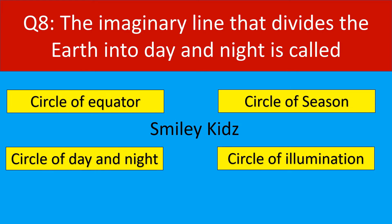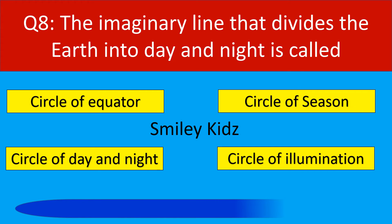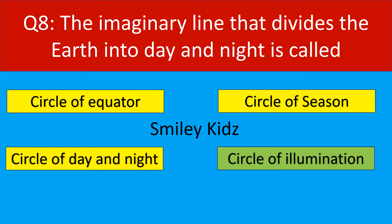Question number 8. The imaginary line that divides the earth into day and night is called. Your options are circle of equator, circle of season, circle of day and night, circle of illumination. Your time starts now. The correct answer is circle of illumination. The imaginary line that divides the earth into day and night is called circle of illumination.